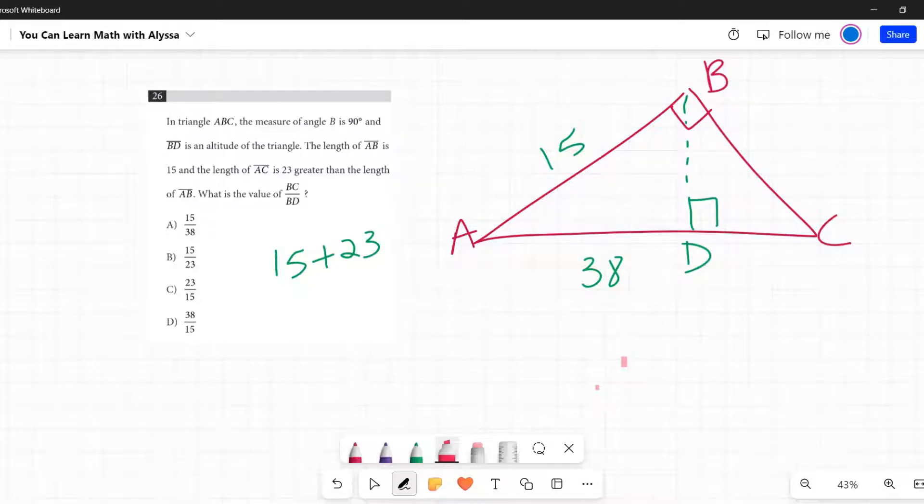Because if you look at ABC, angle A is one of its angles, and BAD, angle A is one of its angles. As soon as you have two angles that are congruent, you have similar triangles. So BAD is similar to ABC.